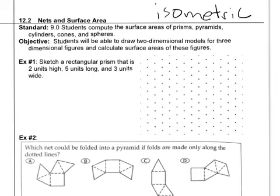So for example, example one here says sketch a rectangular prism that is two units high. You could go two units right here and five units long. So then you could go down kind of at an angle of five.